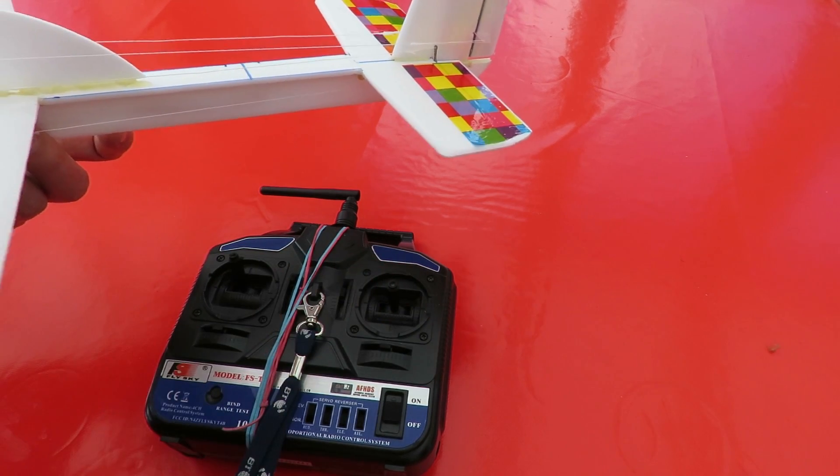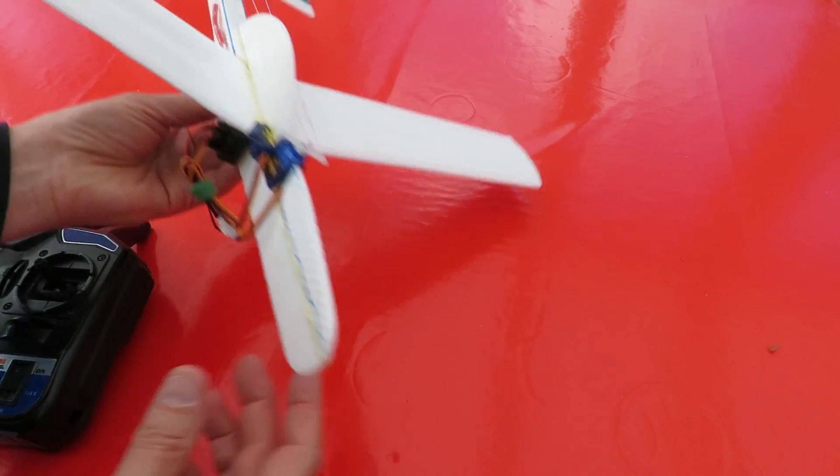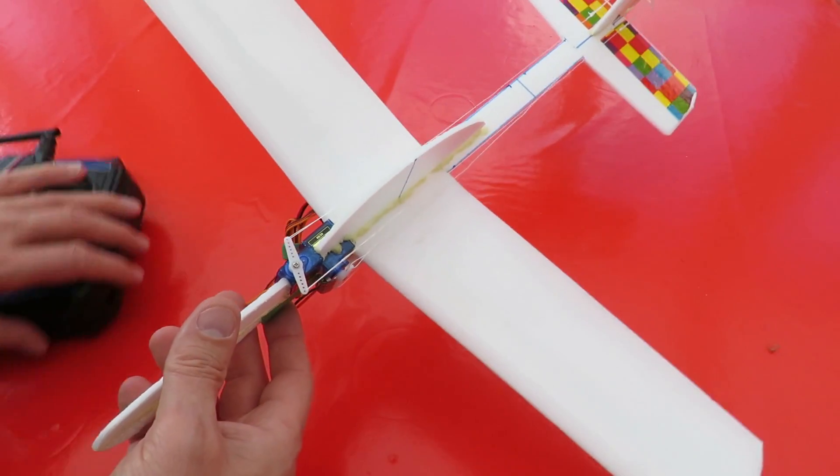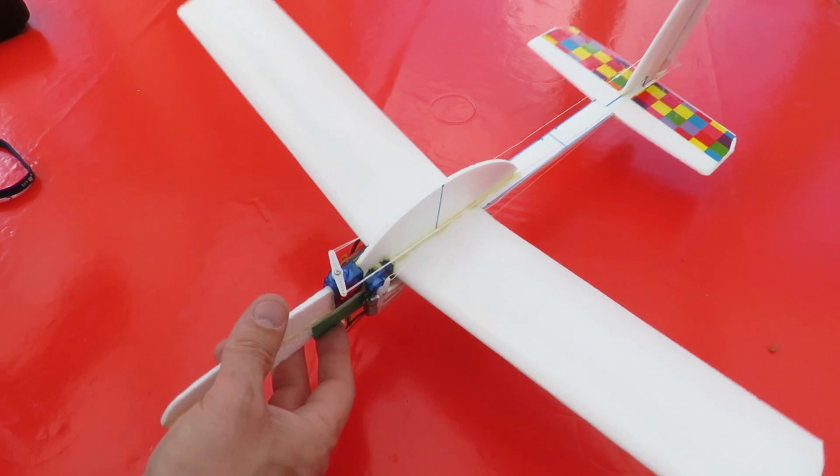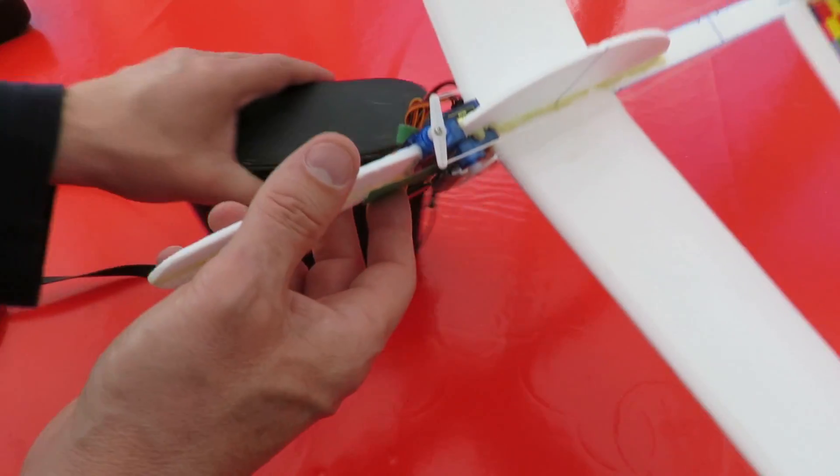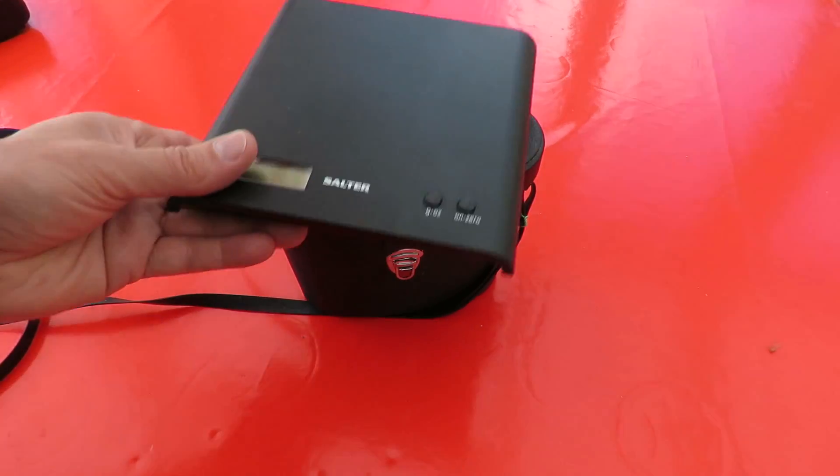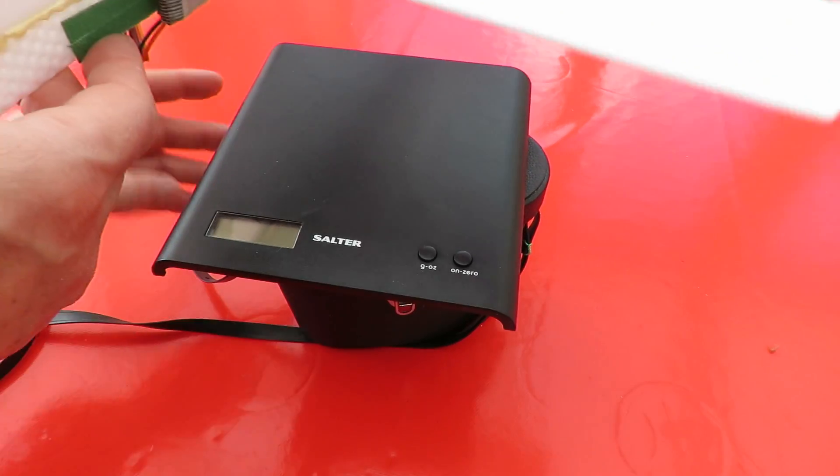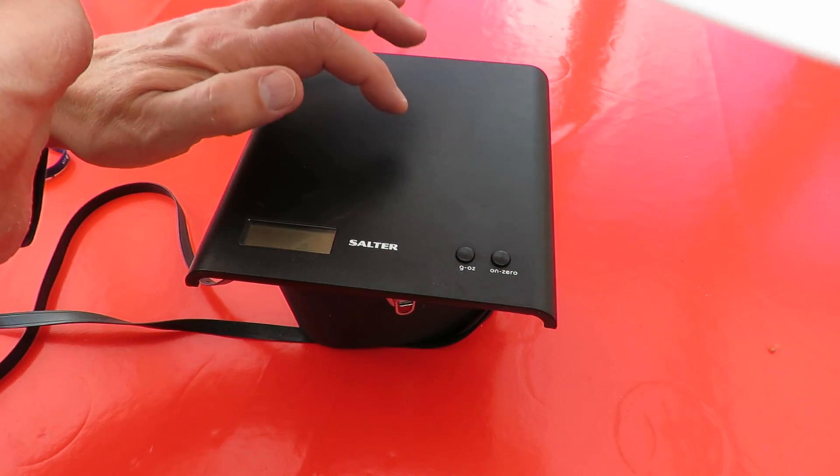So let's put it on the scale, see what it looks like. I've got to balance the scales up here so that it doesn't touch the table. All right, we're on grams.